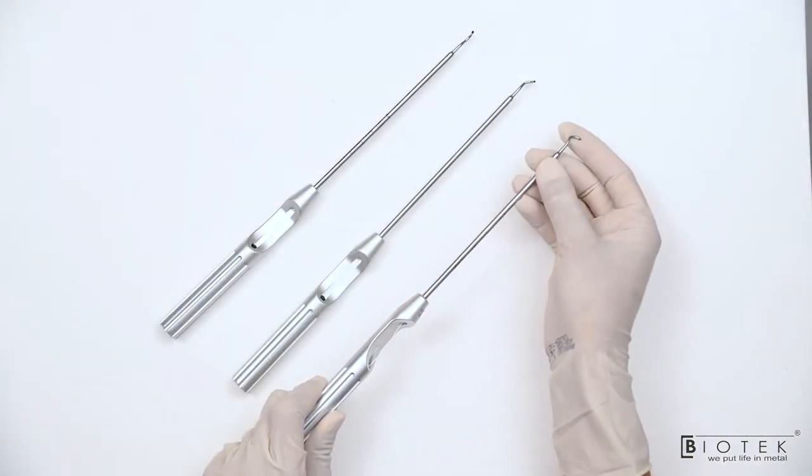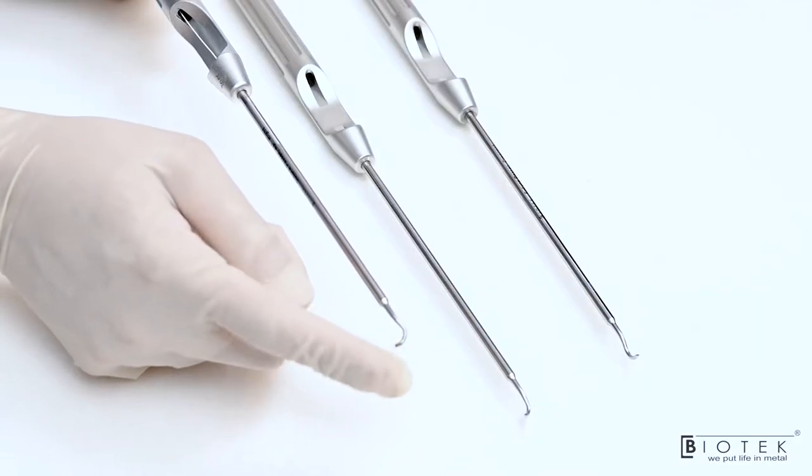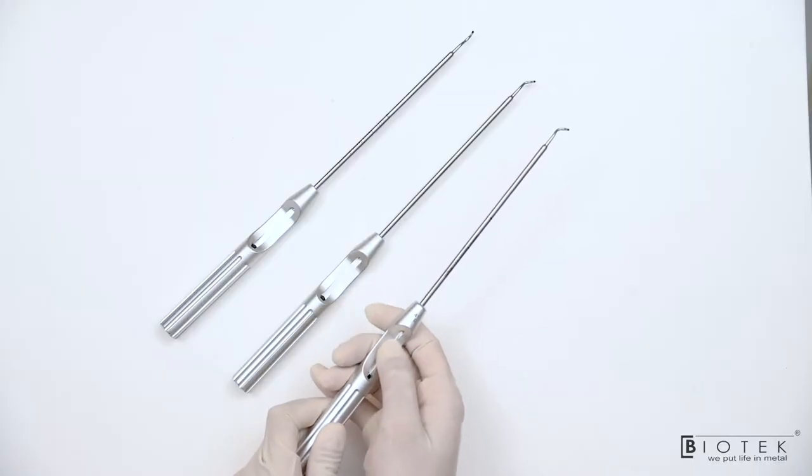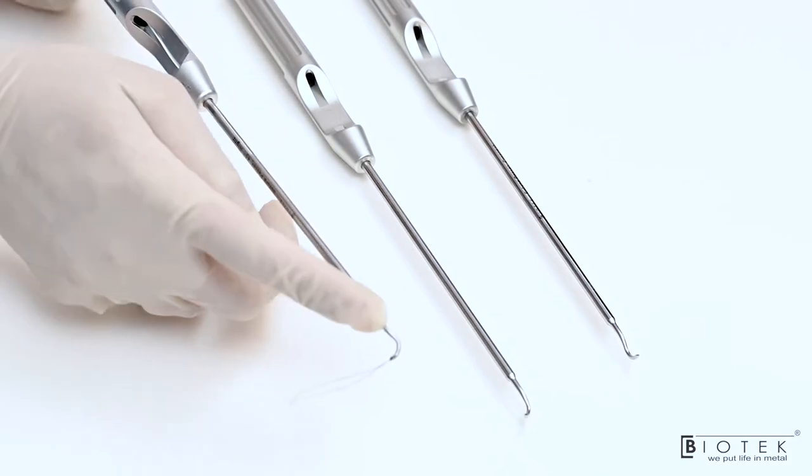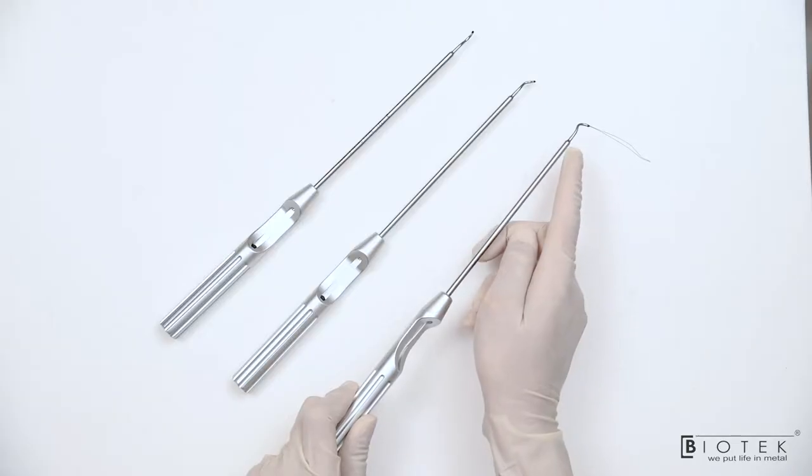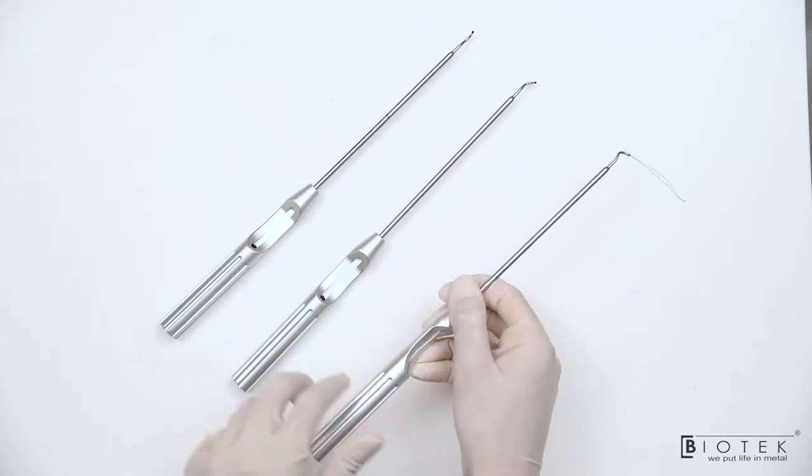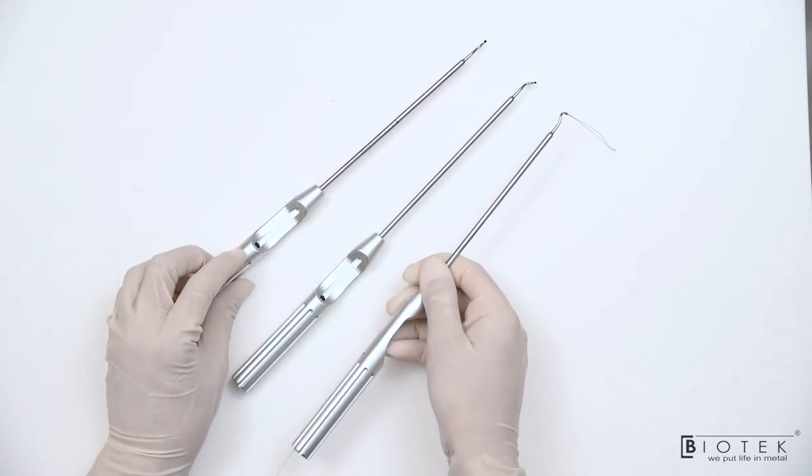This is reusable suture passer which has a sharp tip and a hollow cannula inside which passes a metal wire like this. It is 45 degree right. Similarly there is 45 degree left and straight curved suture passing wires.